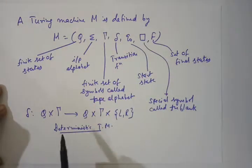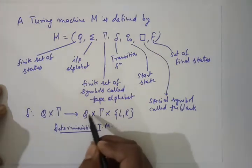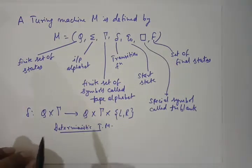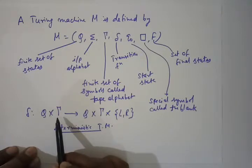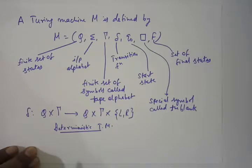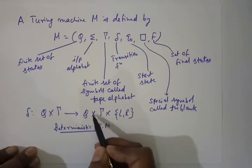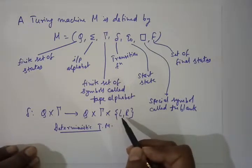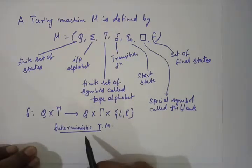The transition function δ in a Turing machine is defined as Q × Γ → Q × Γ × {L, R}. This means we are in a particular state and we read a symbol from the tape alphabet. Then we can move to another state, the symbol on the tape can be replaced by a new symbol or the same symbol, and the read/write head can move one cell left or right. This is the transition function for a deterministic Turing machine.